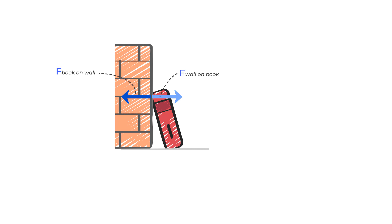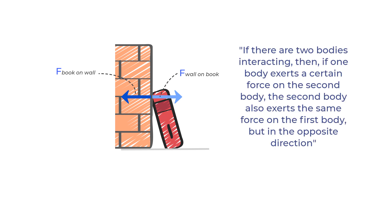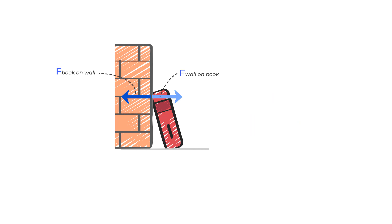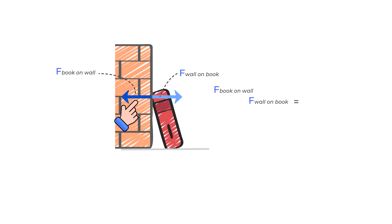This is exactly what Newton's third law of motion says: if there are two bodies interacting — in this case, book and wall — then if one body exerts a certain force on the second body, the second body also exerts the same force on the first body, but in the opposite direction. So we can say that the force of wall on the book equals the force of book on the wall, and since they are opposite in direction, we put a negative sign next to one of them.